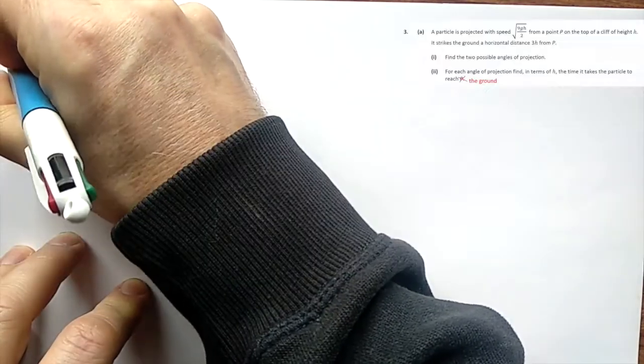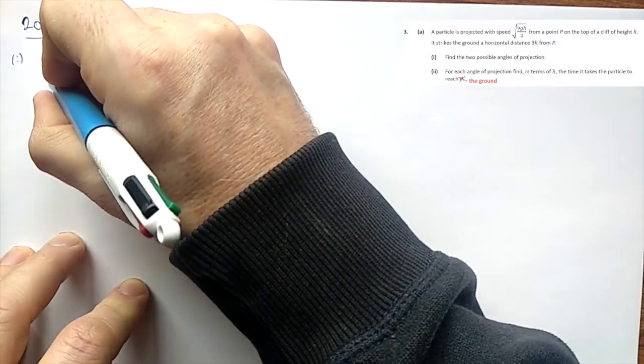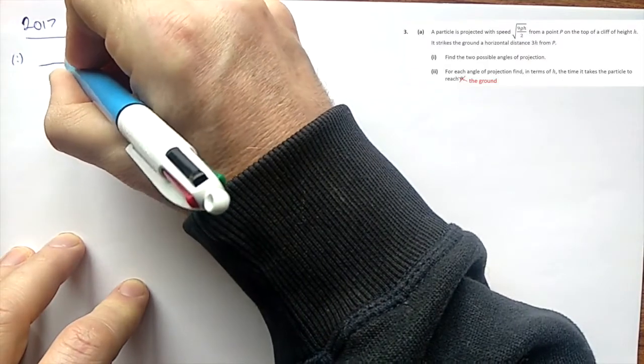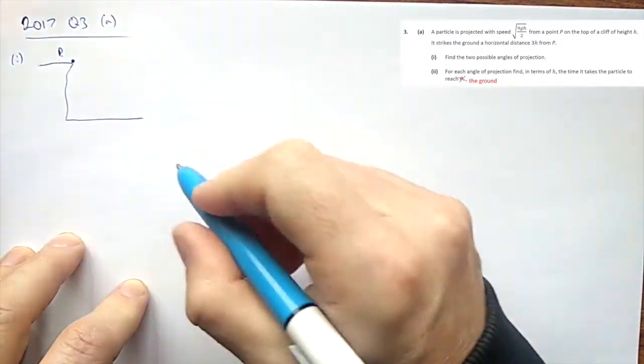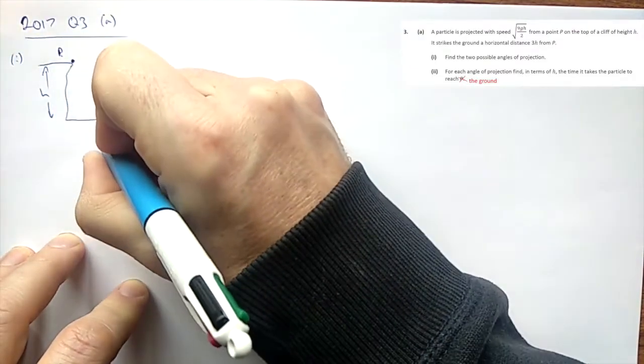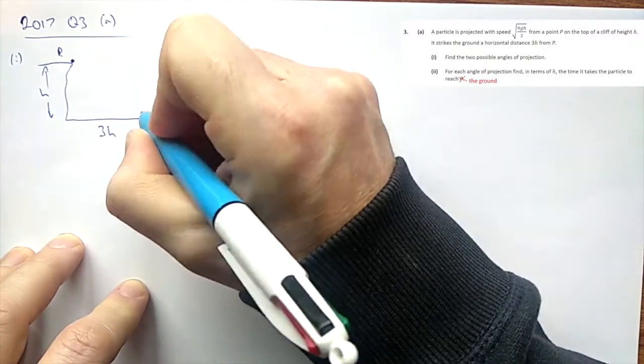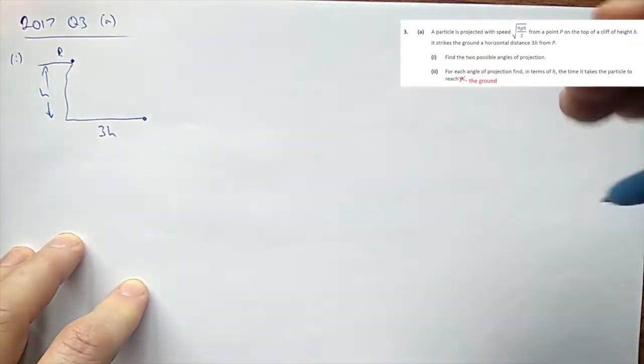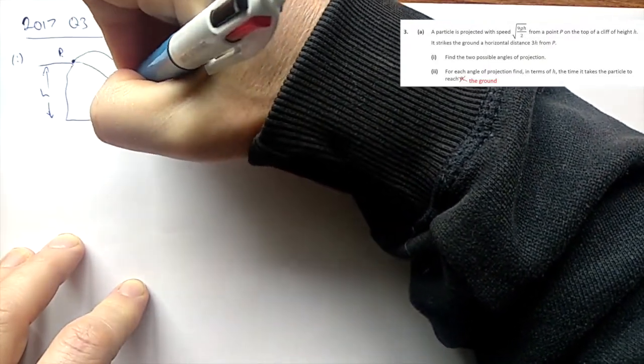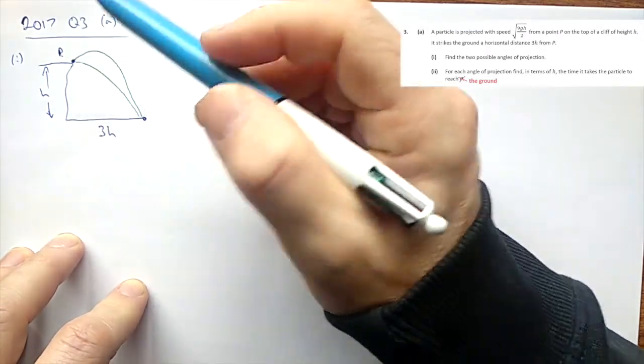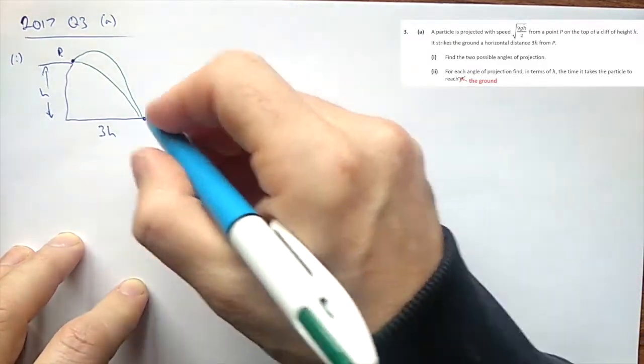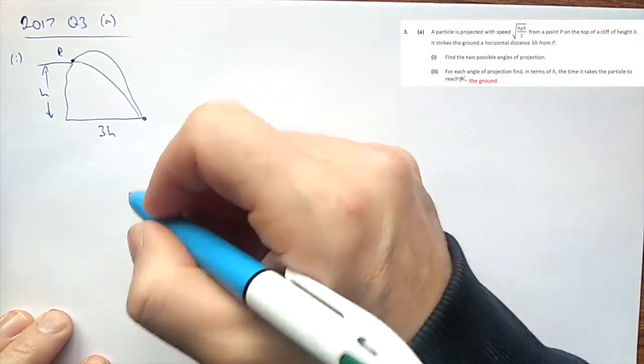So let's look at this in part 1. First of all, like everything, we're going to start drawing a diagram. So there's a little cliff and the ground. We start here at P, and our particle is launched off the cliff. If this is h high, and this is 3h, not quite to scale, but we get the idea. Now this particle is either going to go down like that, or up and down like that. So we can see we have two different possible angles coming off. Let's have a little look at this. Again, we're going to break this into the x and y directions here to figure this out.